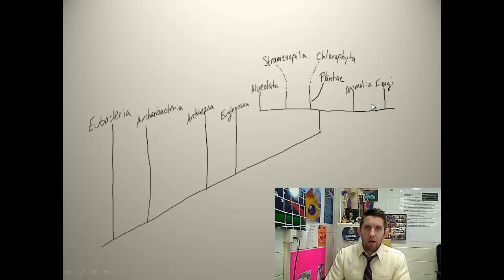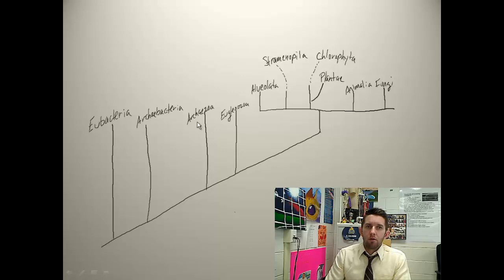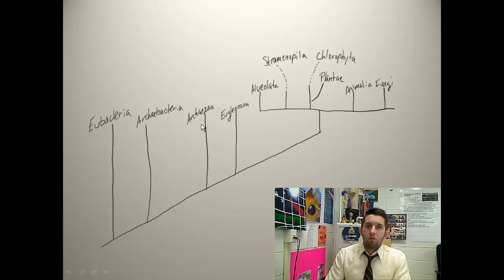Everything to the right of this boundary has eukaryotic cells. These five in the middle are the candidate kingdoms of Protista — these are the categories within Protista that some taxonomists are saying deserve to be their own kingdoms. And these are the ones we're going to talk about today, starting with archaeozoa and moving to the right.